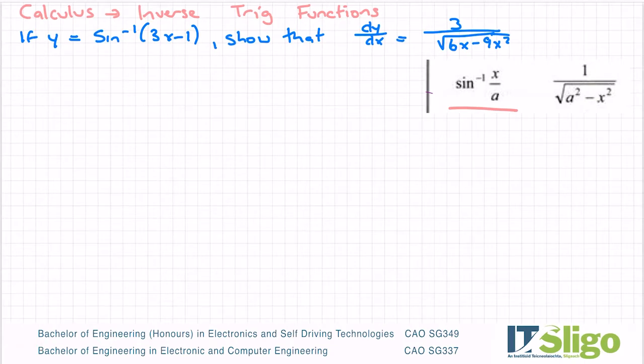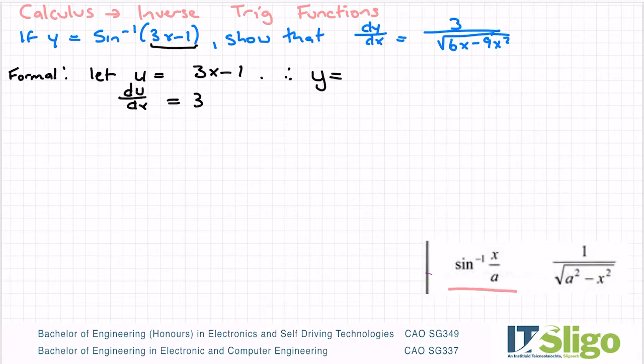I'm going one informally because different schools teach it different ways. So this would be what I would call a formal way of doing it, and it's where you use the substitution method. You substitute the inner function, let that equal to u. Let u equal 3x minus 1, so du/dx equals 3. And therefore, I can now write my y function, my original function as the sine inverse of u.